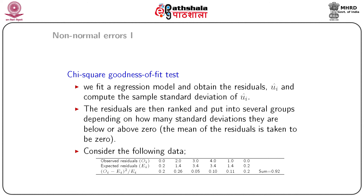For the chi-squared goodness of fit test, in the first step we fit a regression model to the given data and obtain the residuals using the method of least squares. From the obtained model we get the residuals ui hat — the estimated errors. We also compute the corresponding sample standard deviation for ui hat. The residuals are then ranked and put into several groups depending on how many standard deviations they are below or above zero.